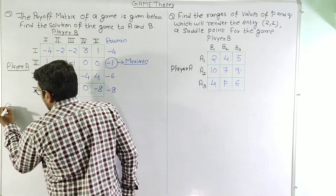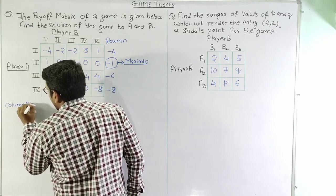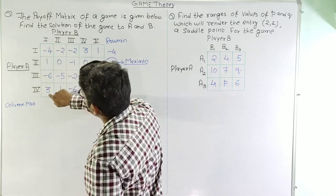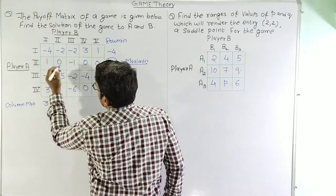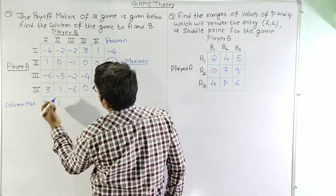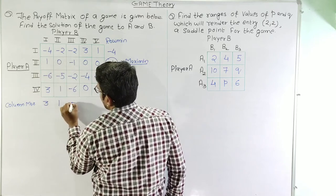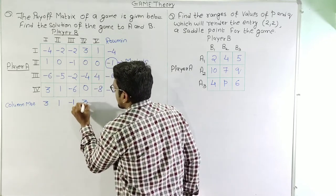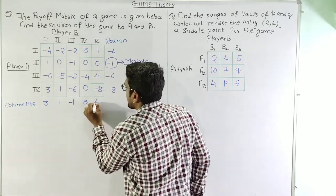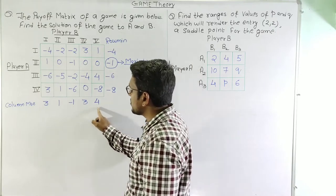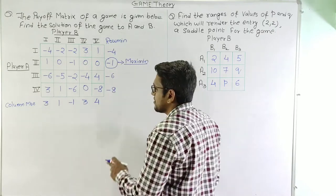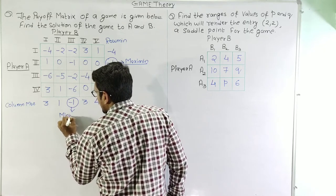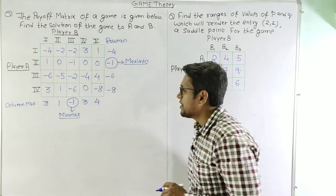Next we calculate the column max values. The maximum value in column 1 is 3, in column 2 is 1, in column 3 is -1, in column 4 is 3, and in column 5 is 4. Among these values we select the minimum value, which is -1, so -1 becomes the mini-max value.